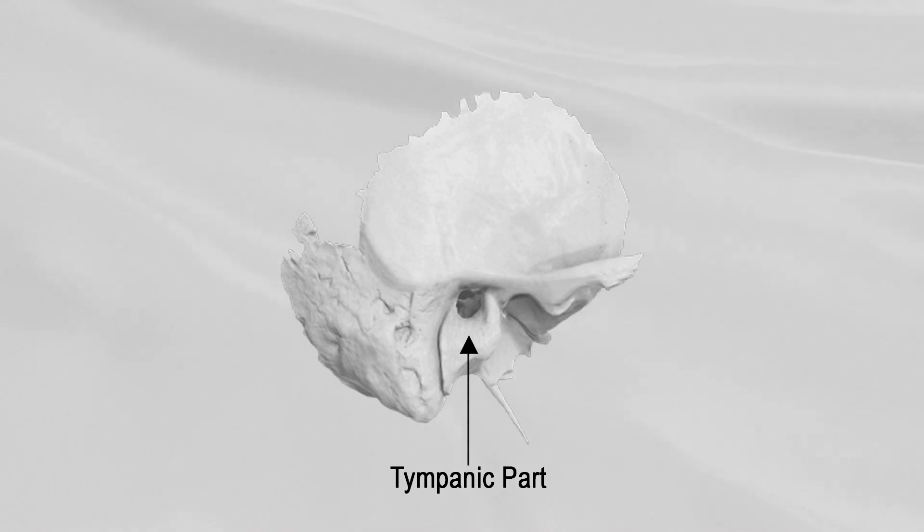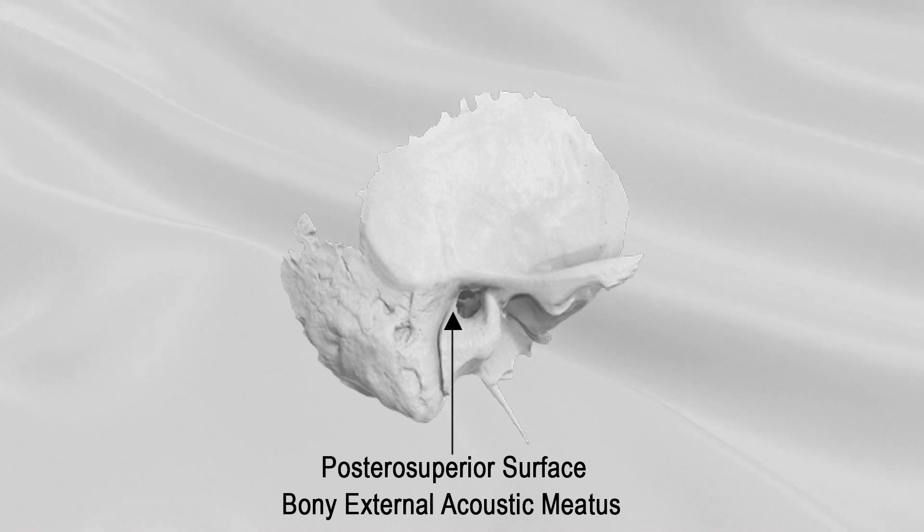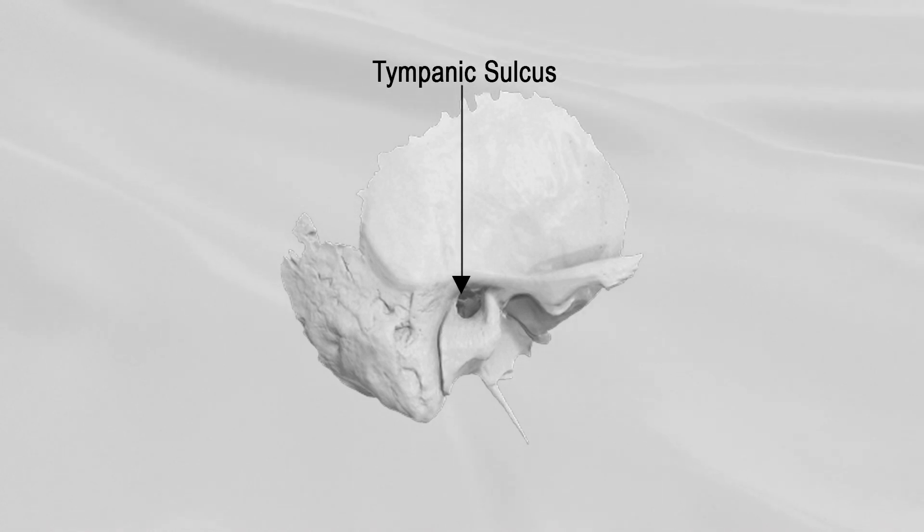Tympanic part: The tympanic part is a curved plate of bone lying below the squama and in front of the mastoid process. Its posterosuperior surface is concave and forms the anterior wall, the floor, and part of the posterior wall of the bony external acoustic meatus. Medially, it presents a narrow furrow, the tympanic sulcus, for the attachment of the tympanic membrane.